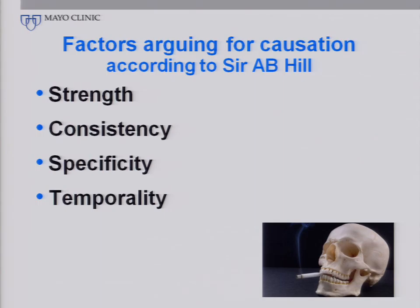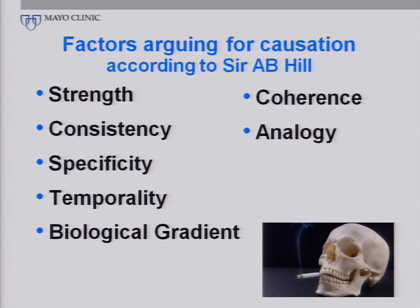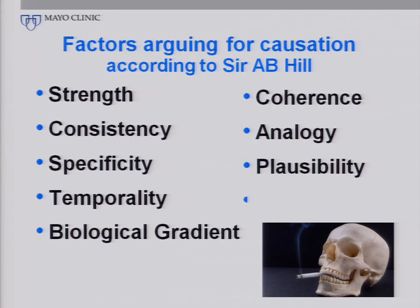Temporality — did the exposure precede the actual outcome? Biologic gradient — if you have more of an exposure, is there more of an effect? Smoking obviously fulfilled this criterion. Coherence — did things make sense? They certainly did for smoking, because you could draw a very nice parallel between increases in smoking prevalence and later increases in lung cancer prevalence. Analogy — were there other types of exposures that created the same kind of outcome? Yes. Was there a biologically plausible mechanism? This was used by the tobacco companies for years to argue against it, because they had trouble inducing lung cancer by smoking hamsters and rats, but the scientific and mechanistic basis eventually became known. And finally, experiment — if you stop having exposure, will you stop having the outcome? In the case of smoking, fortunately, the answer is yes.